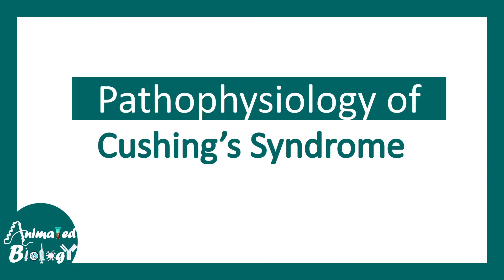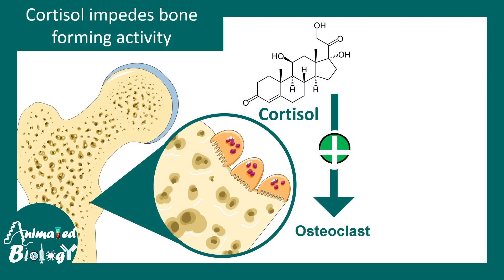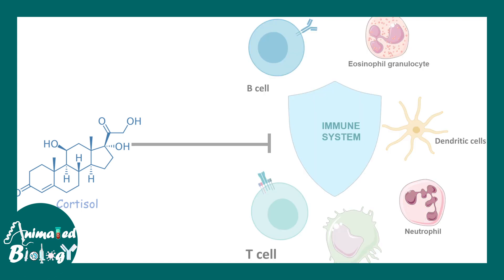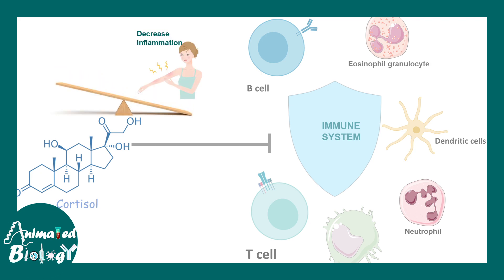Now let's understand the pathophysiology of Cushing's syndrome. Cortisol impedes bone-forming activity by promoting osteoclastic activity, leading to decreased bone density and osteoporosis. Cortisol also suppresses almost all components of the immune system, leading to immunosuppression, which increases the risk of infection. This decrease in immune function reduces inflammation on one hand but increases infection risk on the other.